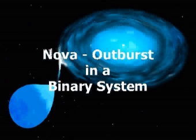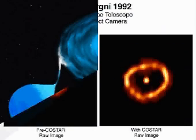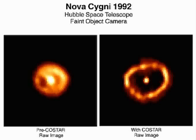Every now and then, a seemingly new star appears in the sky, which before had hardly been visible even with the biggest telescopes. Such a star that suddenly changes its luminosity by orders of magnitude is called a NOVA. It is possible to observe NOVAs still many years after their apparent extinction with the Hubble Space Telescope, as for instance the NOVA that appeared in the constellation of the Sworn in 1992.